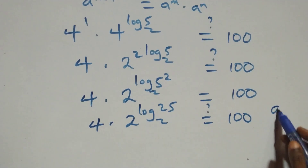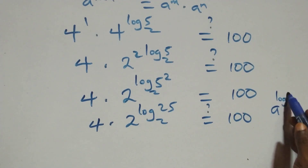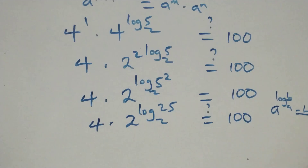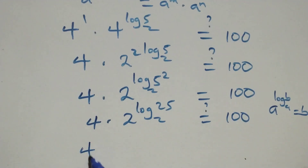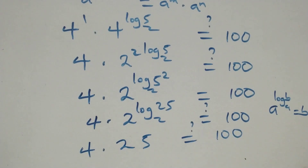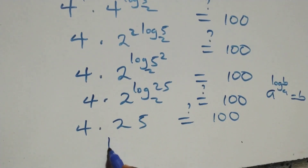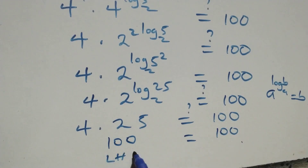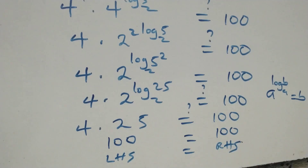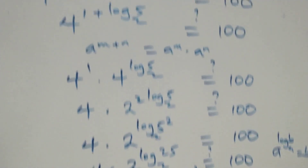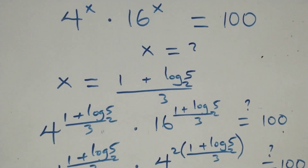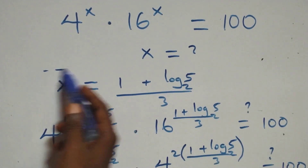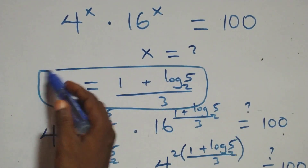This follows when we have a raised to power log b to base a, which equals b. So here we have 4 times 25, which equals 100. And 4 times 25 is 100, which equals 100 — left-hand side equals the right-hand side. Therefore, we conclude that x equals to (1 plus log₂5) all over 3 satisfies this given problem.